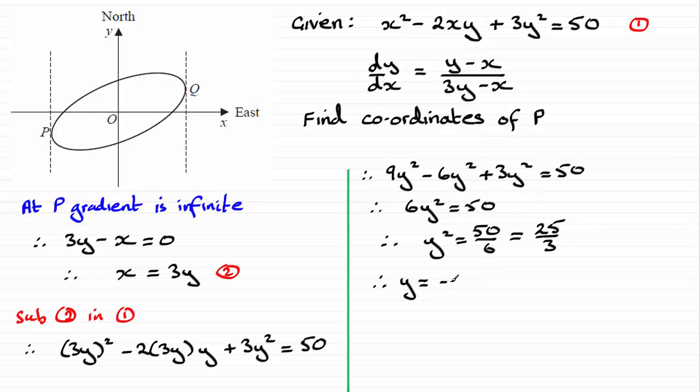Well, we only want the negative value, not the positive value, because the y coordinate of P is clearly negative. And if you square root this fraction, square root of 25 is 5 and in the denominator, we'll just leave it as root 3. You could leave it like that or you might want to rationalize this by multiplying top and bottom here by root 3. And if you do that, you're going to end up with minus 5 root 3 all over 3.